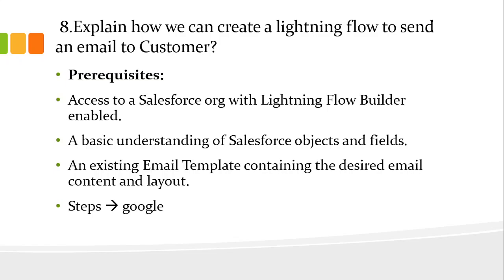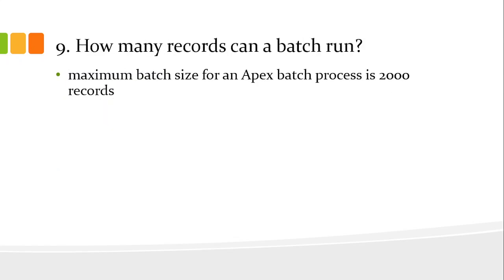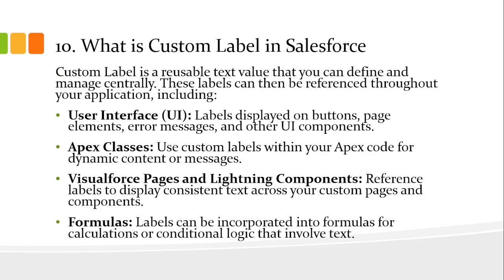How many records can a batch run? The maximum batch size for the Apex batch process is 2,000 records.